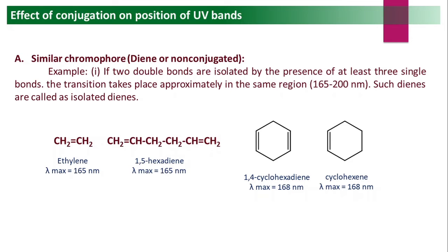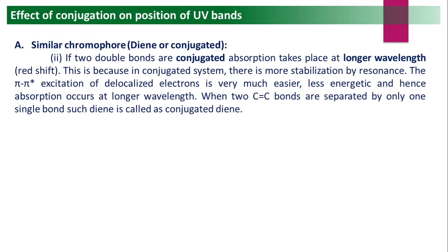Now for conjugated dienes: if two double bonds are conjugated — separated by only one single bond in an alternating double-single-double pattern — the absorption shifts to a longer wavelength. The conjugated system shows a bathochromic or red shift. This is because conjugated systems have greater stabilization by resonance; the delocalized π→π* excitation requires less energy and hence absorption occurs at a longer wavelength.